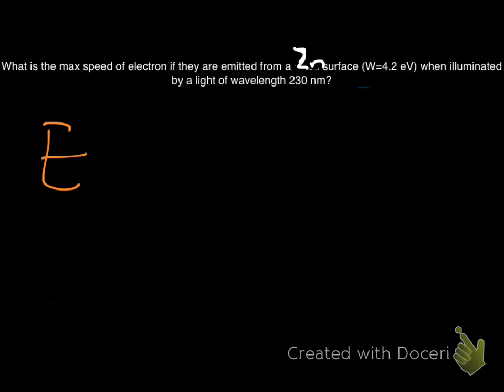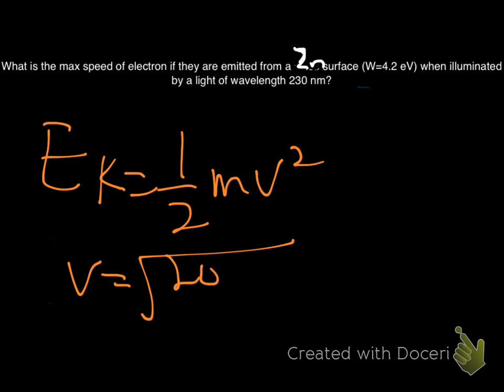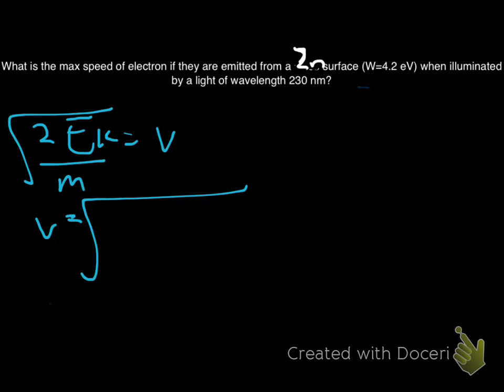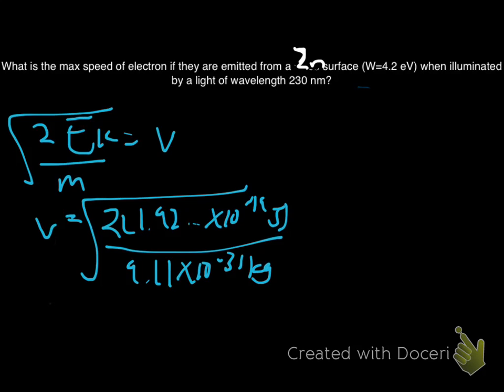So remembering that kinetic energy is equal to half the mass times velocity squared. Velocity is equal to square root of 2 times the kinetic energy over the mass. Since I know that, I multiply by the kinetic energy I just found over the mass of an electron. 9-1-1. Therefore, velocity is equal to 6.5 times 10 to the 5 meters per second.